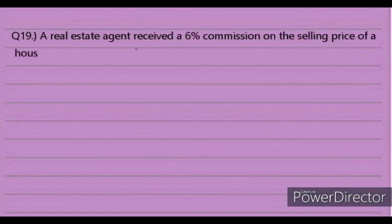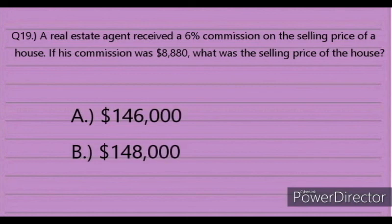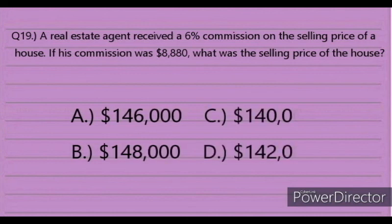Question 19. A real estate agent received a 6% commission on the selling price of a house. If his commission was $8,880, what was the selling price of the house? Answer choices: A. $146,000, B. $148,000, C. $140,000, D. $142,000.